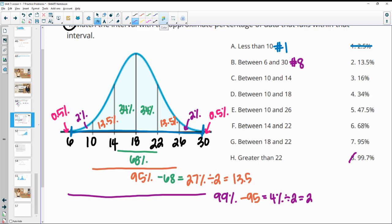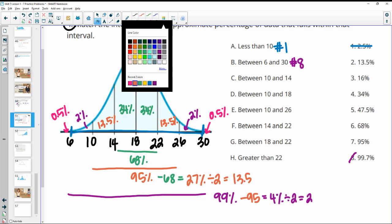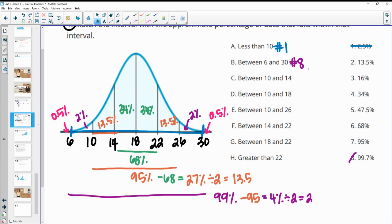For part C, how much is between 10 and 14? So 10 and 14, we can see that we have that part labeled on here. 10 to 14 is that 13.5%. So that's number 2. Between 10 and 18. So 10 to 18, you can just add these two together. 13.5 and 34 is 47.5.